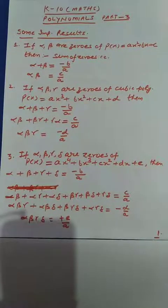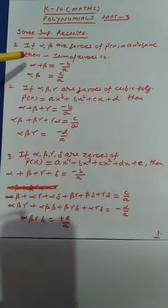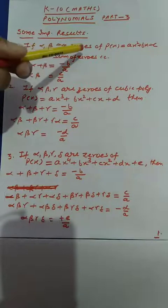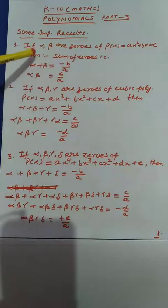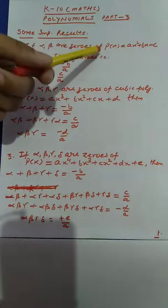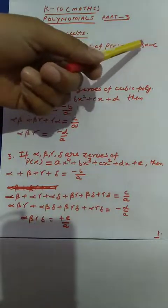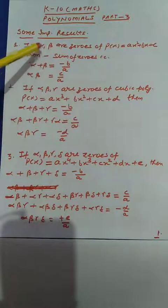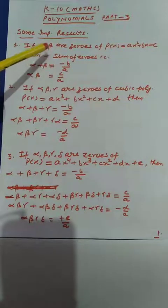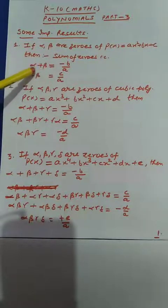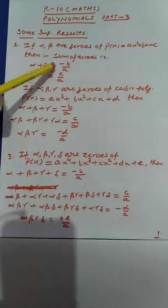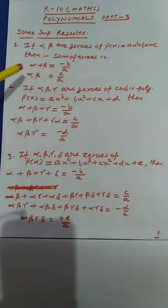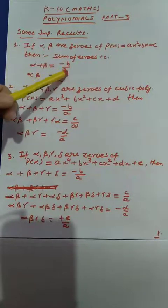The results are as follows. First, I have written the relations between zeros and coefficients for the quadratic polynomial. If I have the quadratic polynomial p(x) equal to ax² plus bx plus c, then there will be two zeros — let these be alpha and beta. Then sum of zeros, alpha plus beta, is equal to minus b divided by a, and product of zeros, alpha times beta, is equal to c divided by a.